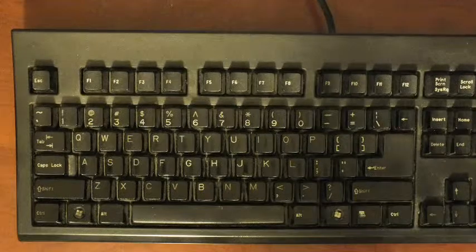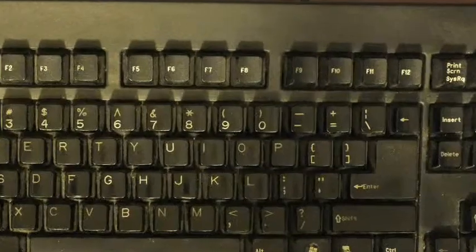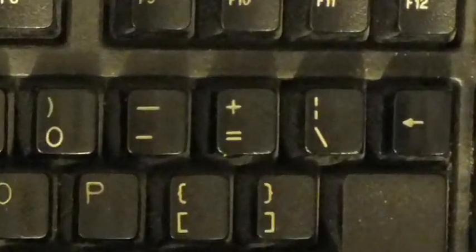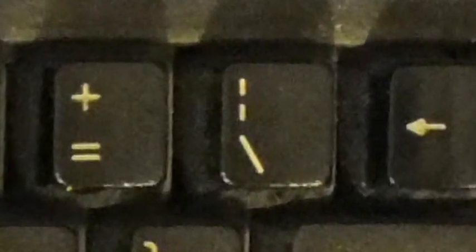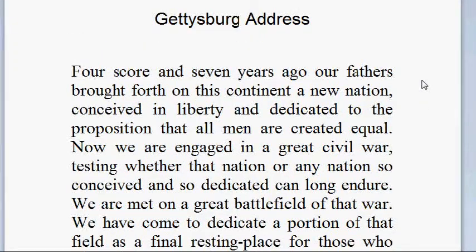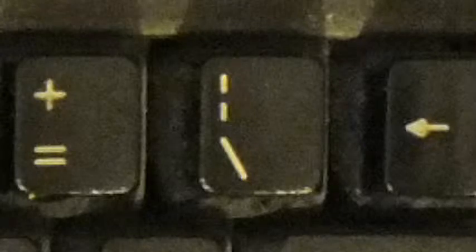On my keyboard, the next to the right-most key on the top row of the main keypad has a backslash printed on it below and a broken vertical bar above. Now if I press this key while holding down the shift key in WordPad, it produces a solid vertical bar, not the broken vertical bar printed on the key.